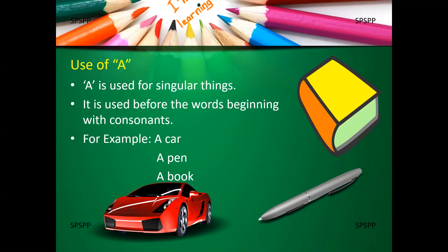A pen. The word pen begins with the letter P which is again a consonant and we say a pen. A book. Look at the word book. It starts with the letter B which is also a consonant and we say a book.